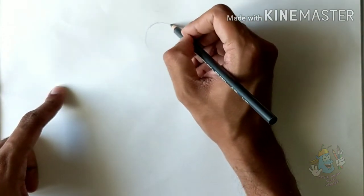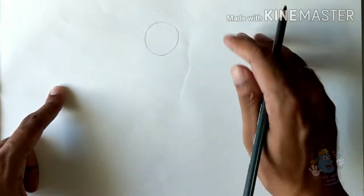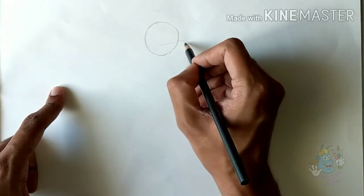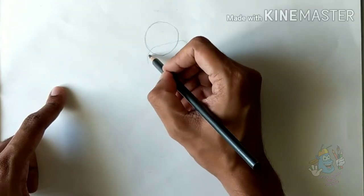So to begin with, let's draw a circle for the upper half of his face. And right below it, we're gonna draw an inverted triangle.